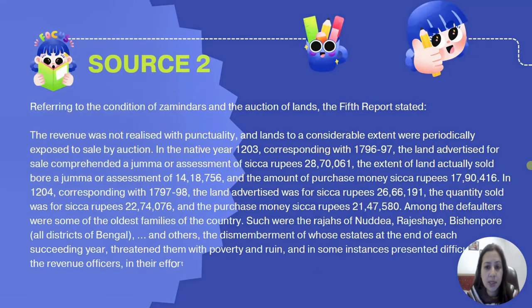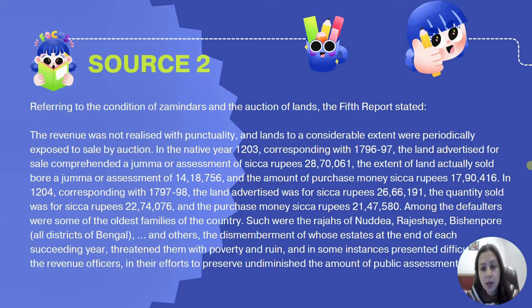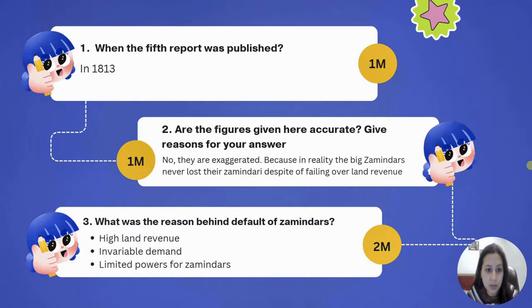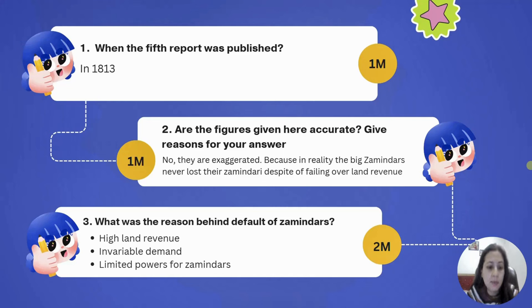The second source of chapter 10 is the Fifth Report — a very important report sent by the British East India Company to the Parliament of England, giving complete details about Zemindari, land revenue policy, collection, and auction of land. In which year was it published? Indirect question — 1813. Are the figures accurate? No, they are completely exaggerated. The report suggests Zemindari was almost lost in India, but in reality big Zemindars never lost their Zemindari despite failing to pay land revenue. Why did Zemindars default on payments? Because of high land revenue, rigid policies, invariable demand, and their limited powers.